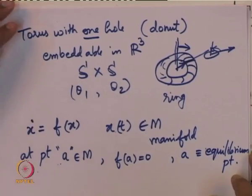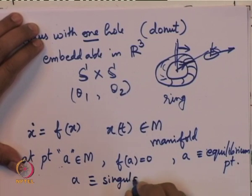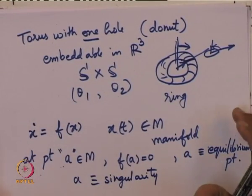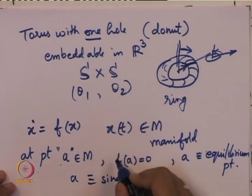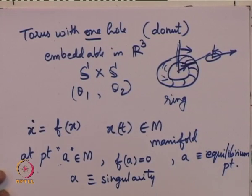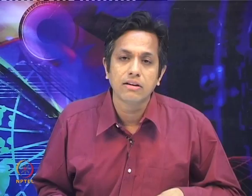That particular point A is also called a singularity. It is singular in the sense that something is different here. In this case, all components of f are 0 — it equals the zero vector — hence the rate of change of x at that point is 0, and in that sense it is an equilibrium point.